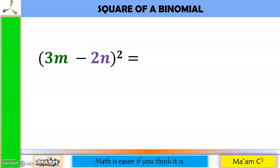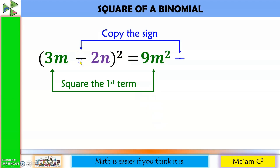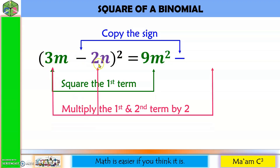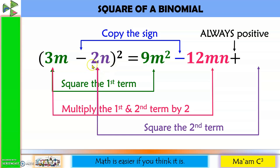Quantity 3m minus 2n squared. Square the first term: 3 squared is 9, m squared is m squared, so we have 9m squared. Copy the sign. Multiply the first and second terms: 3 times 2 is 6, m times n is mn, giving 6mn, times 2 equals 12mn. The third term is always positive. Finally, square the second term: 2 squared is 4, n squared is n squared, giving us 4n squared.